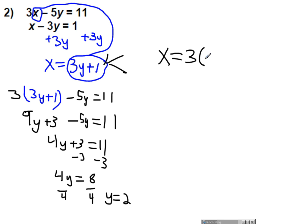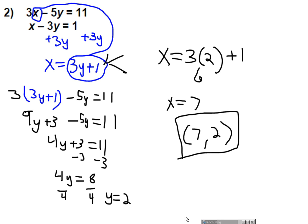But instead of writing the letter y, I'm going to write 2 because y equals 2. 3 times 2 is 6. So x equals 7. And make sure your final answer is written as an ordered pair 7, 2. You always put the x first and then the y.